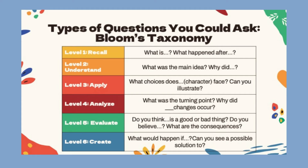The first level involves questions that help you remember or recall information from the text — such as, what is this, or what happened after? The second level checks if you understood what happened: what is the main idea, or what did so-and-so do? The third level is to apply the information — for example, what choices does so-and-so face, or can you illustrate the theme of poverty? Level four is analyze: what was the turning point, or why did those particular changes occur?